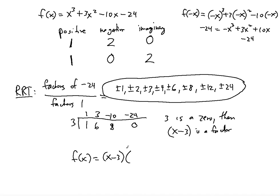We're going to take x minus 3 as the factor and find the missing pieces. The first term is x to the third, so we need x squared here to give us the first term. Using the FOIL method, the next term is negative 3x squared, but in the original polynomial we have positive 3x squared, so we need plus 6x to give us 6x squared. Because negative 3x squared plus 6x squared is 3x squared, as given. Multiplying negative 3 by 6x gives negative 18x, but we have negative 10x, so we add 8. And negative 3 times positive 8 is negative 24, as it should be. So the remaining factor is x squared plus 6x plus 8.